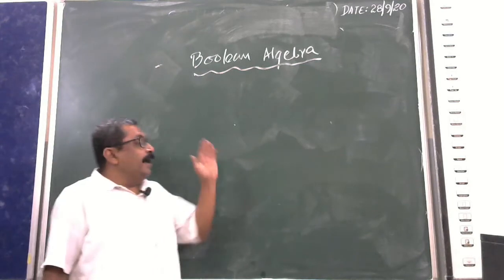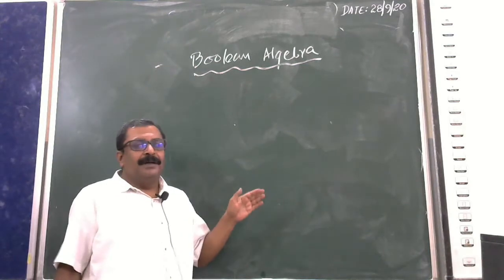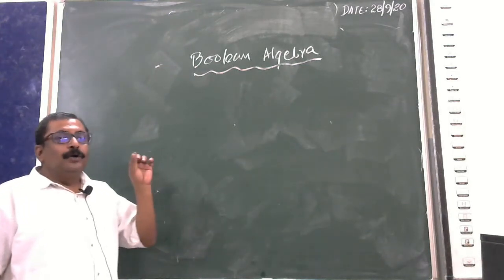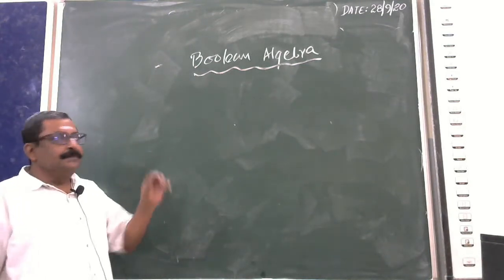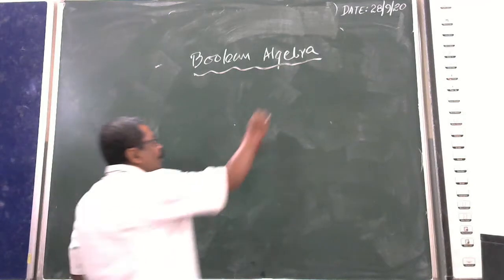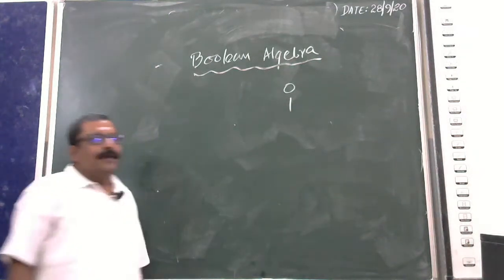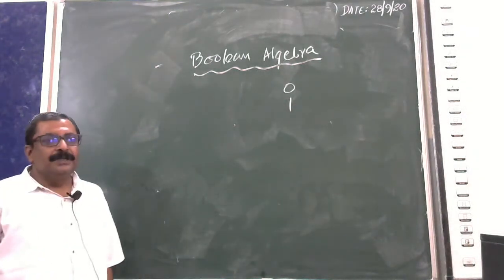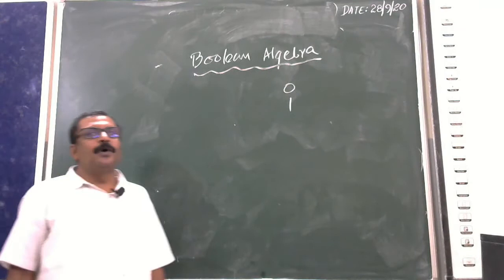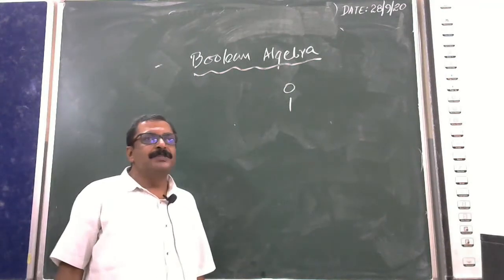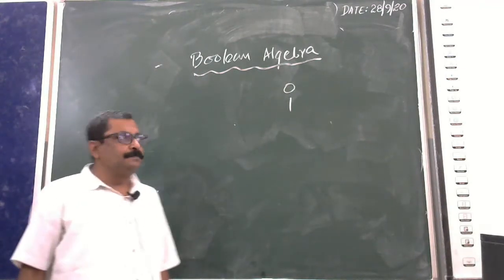In Boolean Algebra, there are two values: 0 and 1. 0 stands for OFF and 1 stands for ON.